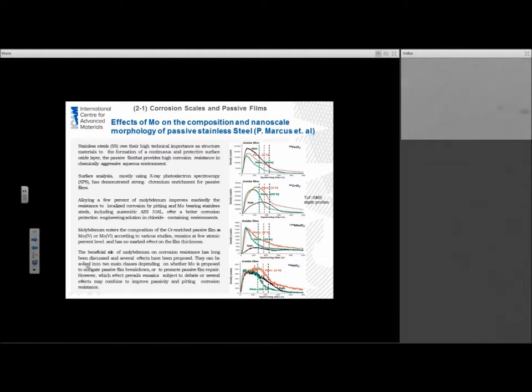The beneficial role of molybdenum on corrosion resistance has been long discussed within the field and several effects have been proposed. But we still don't quite understand what moly does to make 316 such a stainless material. The two camps can be sorted between two main classes depending on whether you believe that molybdenum is there to mitigate the passive film breakdown or it's there to promote passive film repair. Philippe has been able to apply ToF-SIMS to look at the chemistry and the location of the molybdenum within the stainless steel oxide. He's looked at it in three different cases: a natural condition as well as two aging conditions of heat treatments.